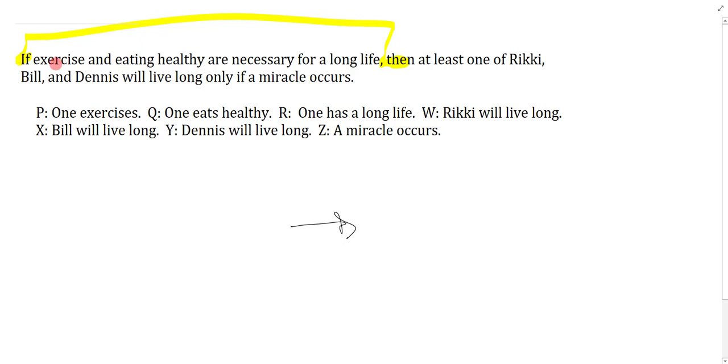So I know from the comma usage here that the main connective is just arrow. The first part says the antecedent says exercise and eating healthy are necessary for a long life. Necessary introduces the consequent, but I need to know which is the condition here.